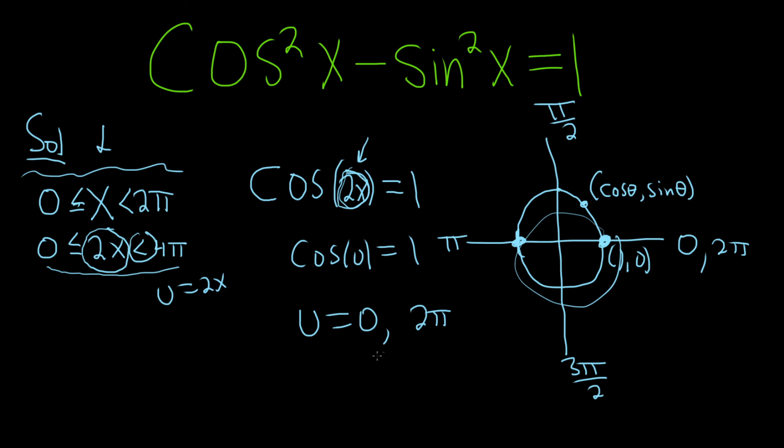And so that would mean that 2x is equal to 0 and also that 2x is equal to 2π. So that means that x is equal to 0 and x is equal to π, right, dividing by 2. And that would be the final answer.